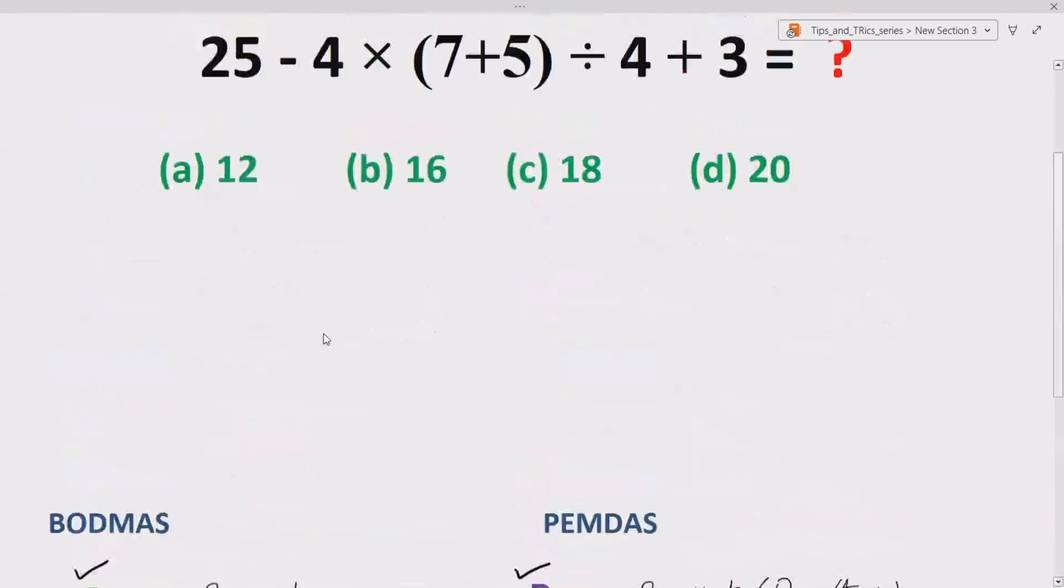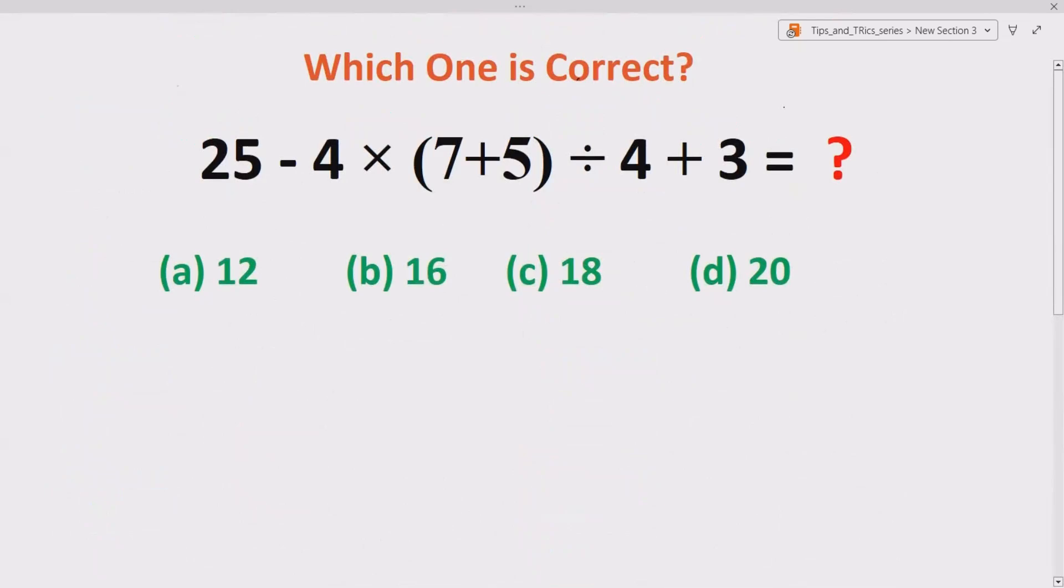Now let's see how we solve our expression using this rule. So we are given 25 minus 4 times 7 plus 5 divided by 4 plus 3. Now 25 remains as it is, minus 4 as it is, because according to BODMAS or PEMDAS we have to solve bracket.